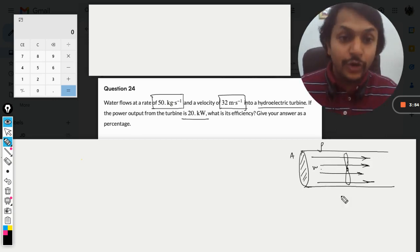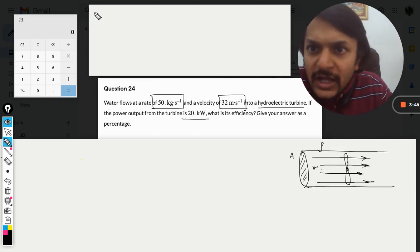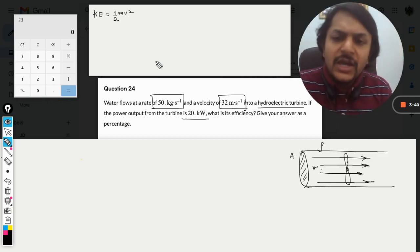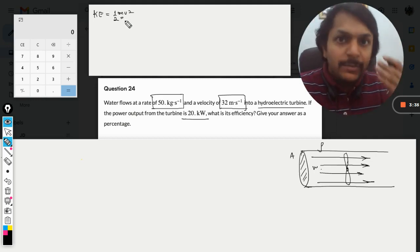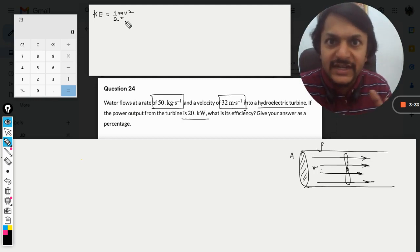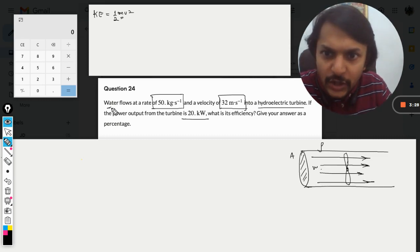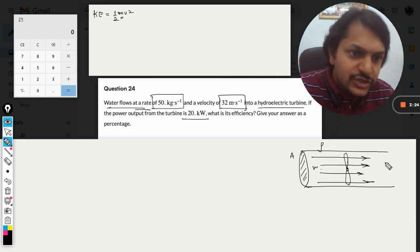In these kinds of questions, the formula for kinetic energy is half m v squared. This is energy, not power. But the problem is we need a constant value for the mass, but the mass is not constant - it is flowing. There is a rate of flow, so we call it dm/dt.